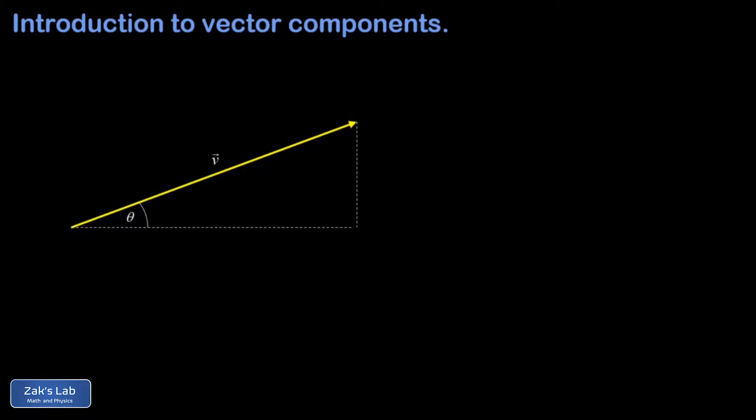On this slide we have a picture of some arbitrary vector v, and I've also included some dashed horizontal and vertical lines for reference. Note that the angle of the vector is labeled with respect to the x-axis as theta. Now the idea of vector components is that we realize the same vector v could be written as the sum of two other vectors.